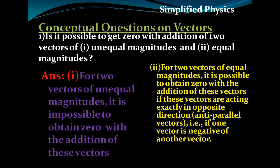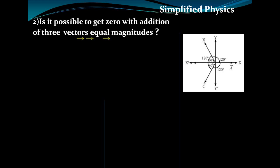If they are of equal magnitude, two vectors acting in opposite directions — antiparallel vectors — result in zero. If one vector is the negative of the other vector, in such a condition we get zero from the addition of those two vectors. But in the case of unequal magnitudes, addition never results in zero.